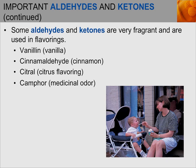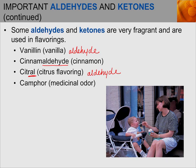Some aldehydes and ketones are very fragrant and used in food flavorings. Vanillin, from vanilla, is an aldehyde. Cinnamaldehyde, found in cinnamon, is an aldehyde — you can tell from the name. Citral, with its -al ending, is used in citrus flavoring. Camphor is a ketone that gives that medicinal odor in certain products. Aldehydes and ketones are all around us and are very important functional groups.